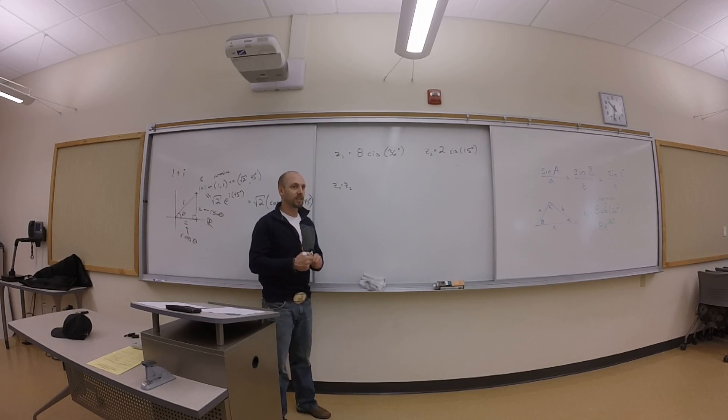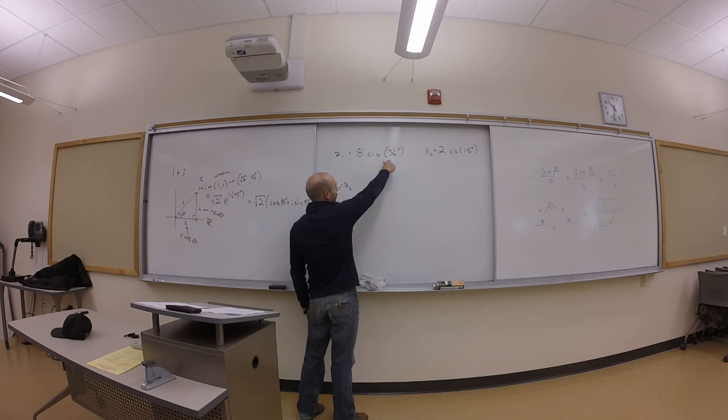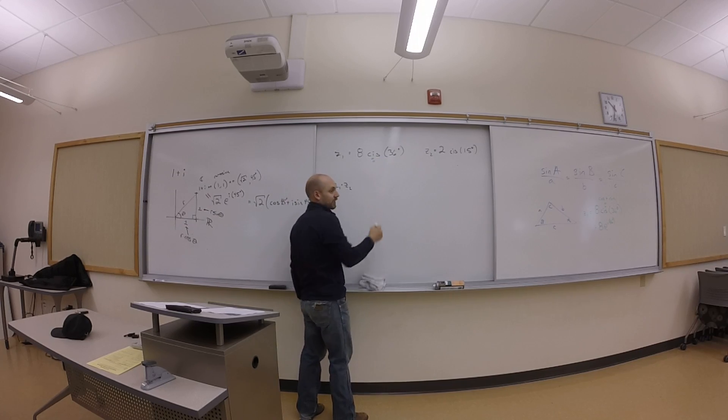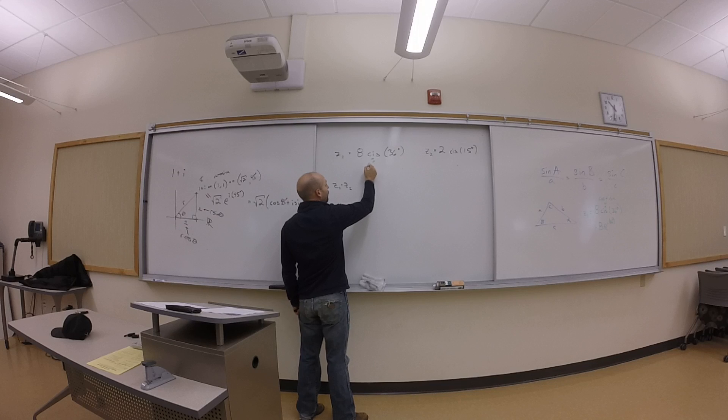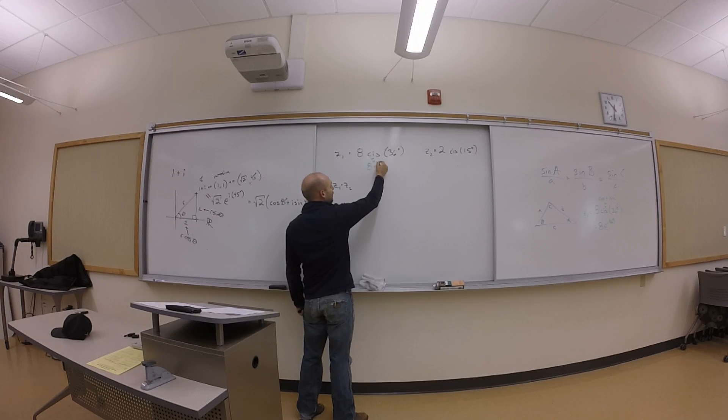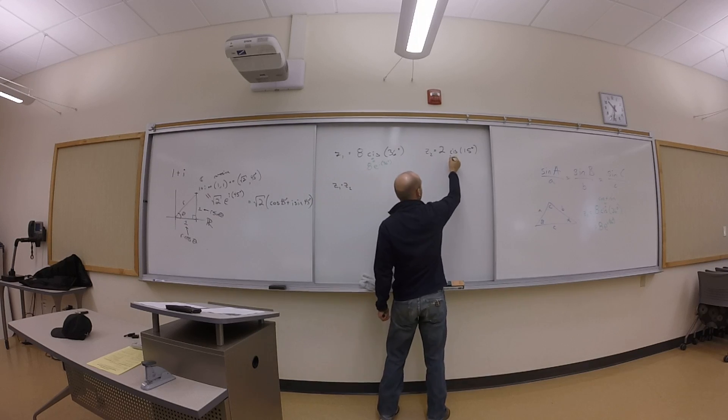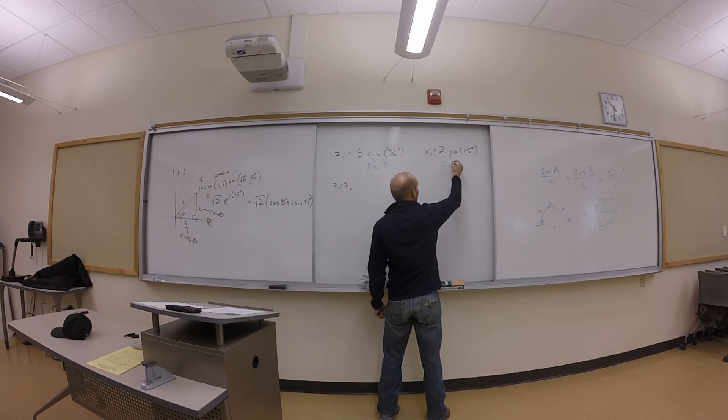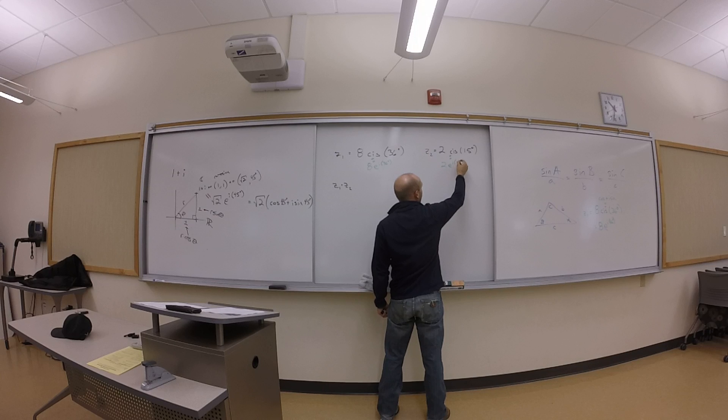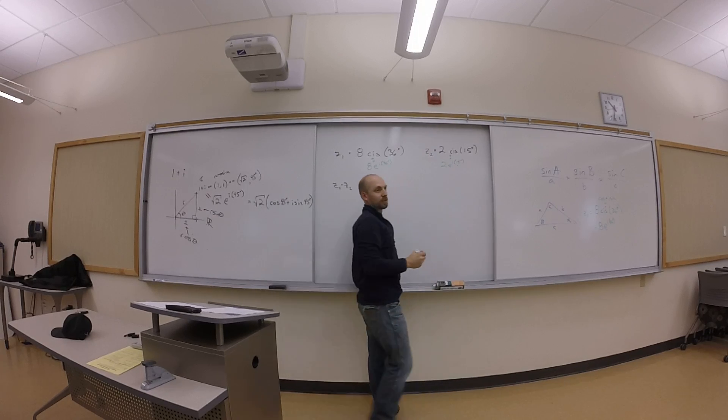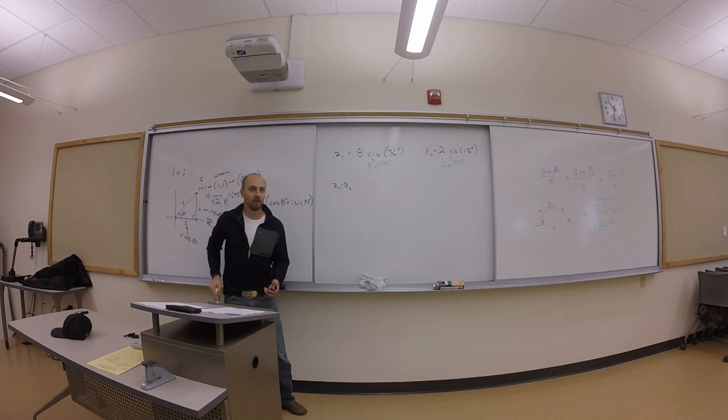Okay, so let me convert these into the usual way I think, because I don't think particularly well on this cis thing. So I'm going to think about this as 8e to the i times 36 degrees. And I'm going to think about Z2 as 2ei 15 degrees. Is this cool? Okay.